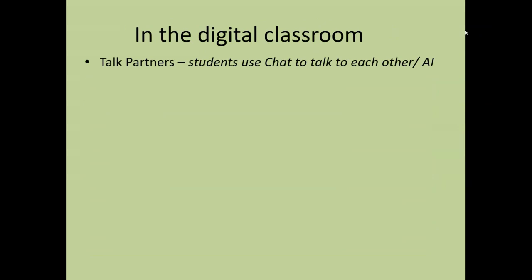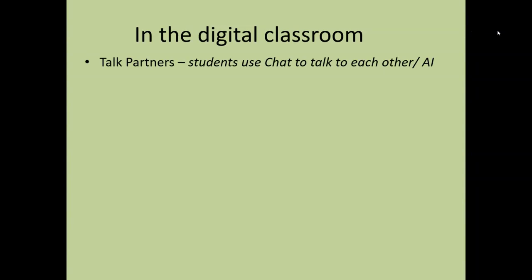So in a digital classroom, here are some ways you can do that. Alexander has the idea of talk partners — in a classroom you just get a person to talk to the one next to them — but you could get students to use chat. If they were in MS Teams, they could chat with each other, or they could chat with an AI. For someone who's neurodiverse and finds talking to other people difficult, evidence shows they find text chat easier. And if they really can't even do that, they might well be happy to talk to an AI.